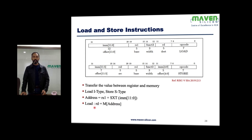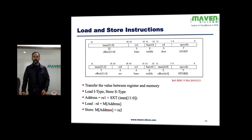When we say load, the destination register will hold the element from memory identified by the address, where the address is rs1 plus the sign extension of the immediate value. When we say store, the memory at that address will receive the value from rs2 — the data in rs2 is written back into memory, and the address is calculated from rs1 and the immediate value. In other words: memory[address] = rs2.